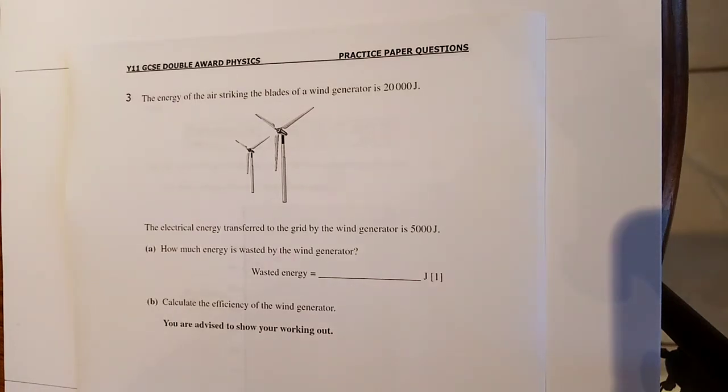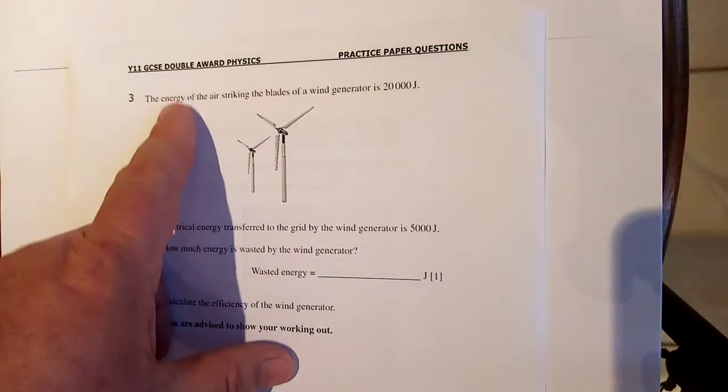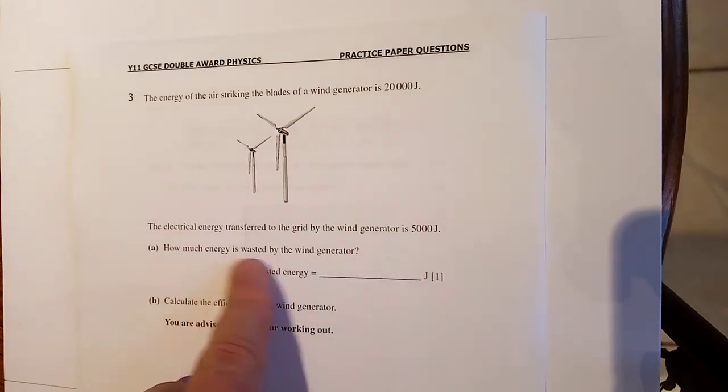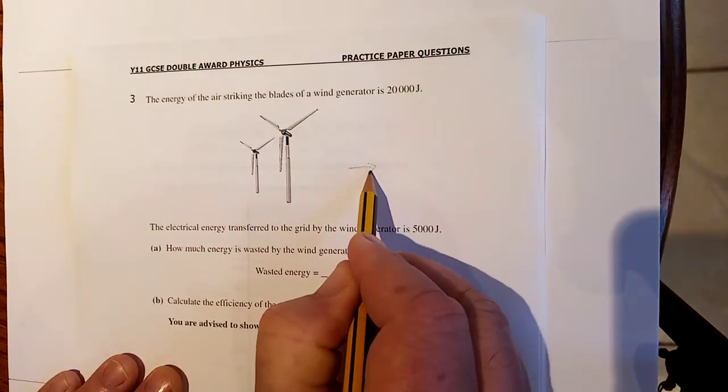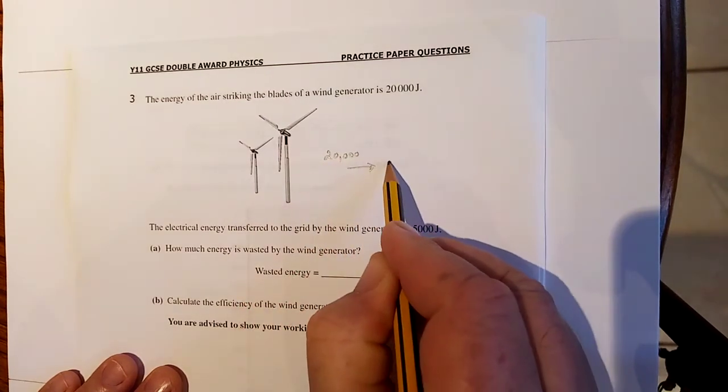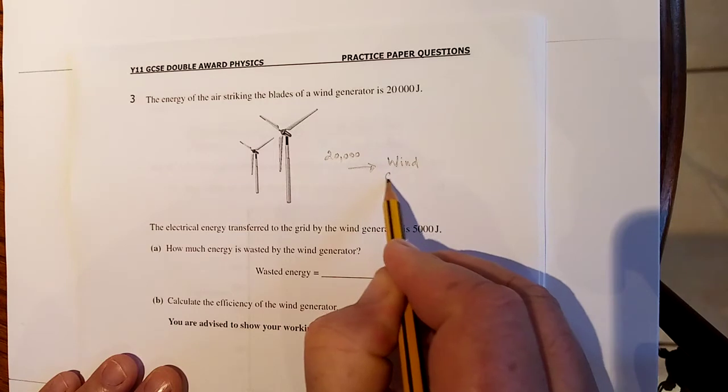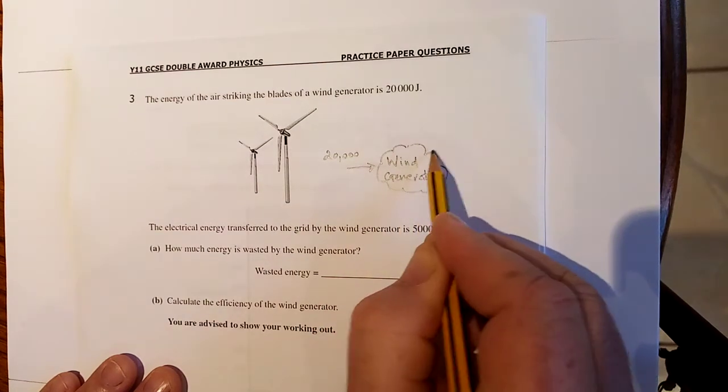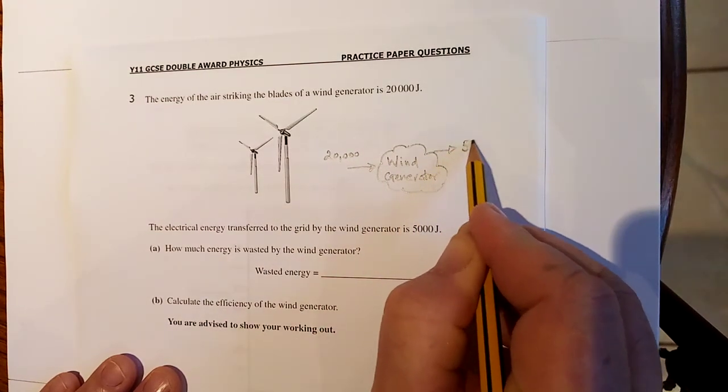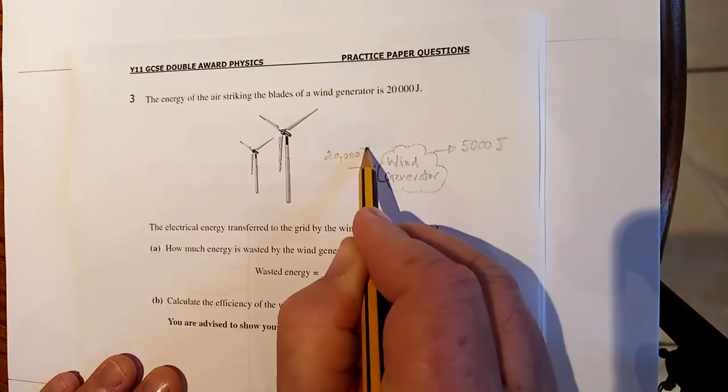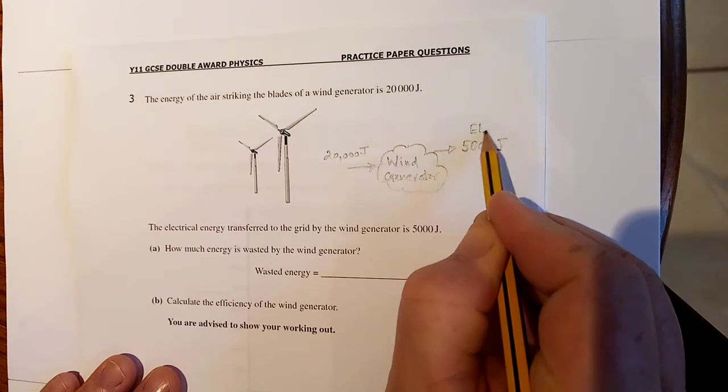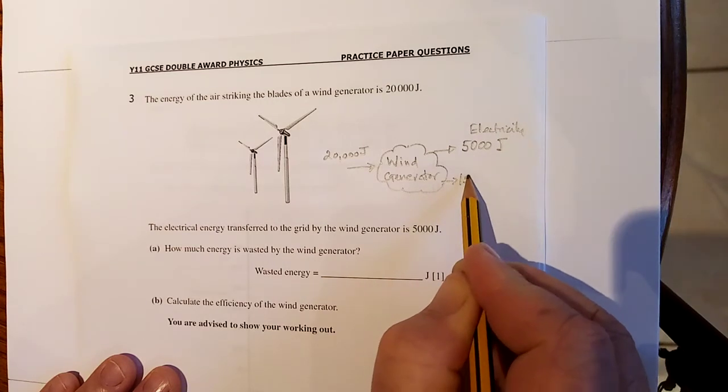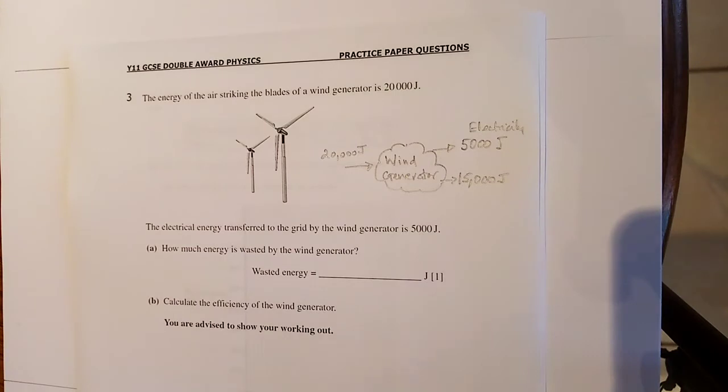On to question number 3. The energy at first taking the blades of wind is 20,000 joules. All energy is measured in joules. The electrical energy transformed by the blade of the wind generator is 5,000 joules. How much energy? So remember, there is 20,000 coming in. Do your bit of spade work. There is your wind generator. It's a machine. It changes kinetic energy, movement of air, to electrical energy. So the useful energy is 5,000 joules. We better put the joules in there. That's of electricity. And the rest is wasted. And then there must be 15,000 wasted.